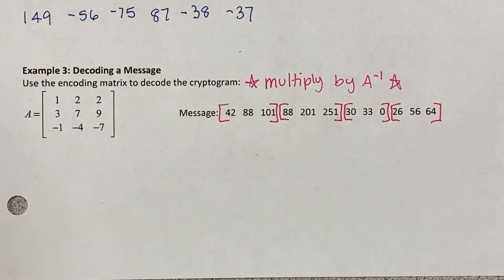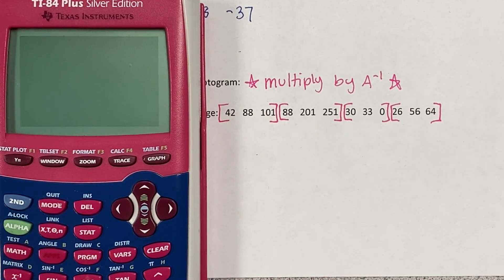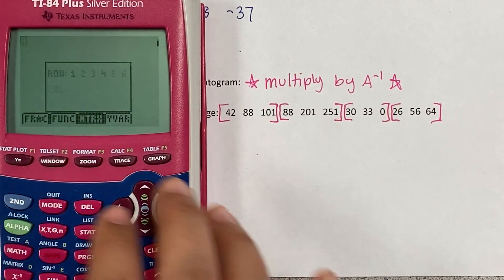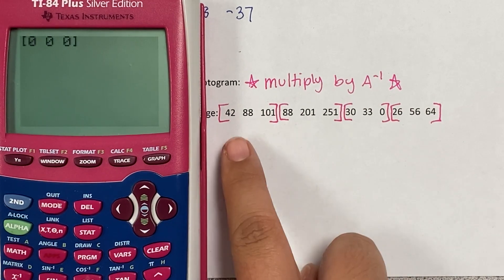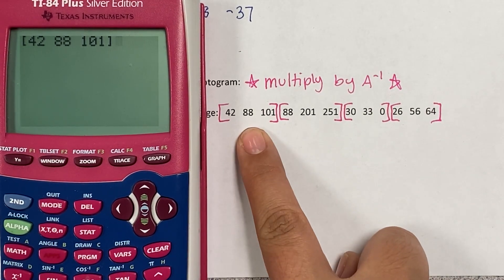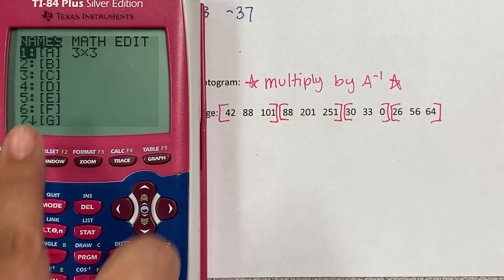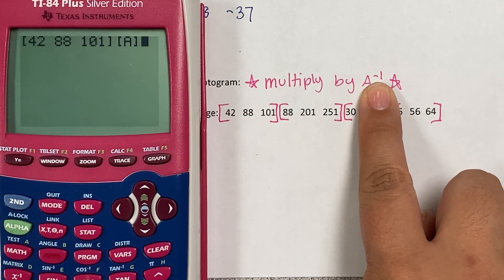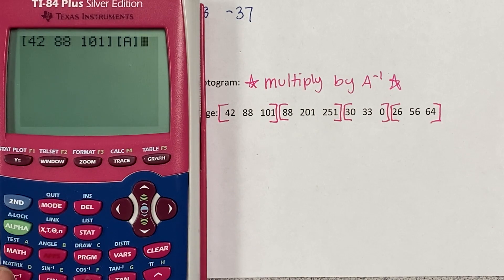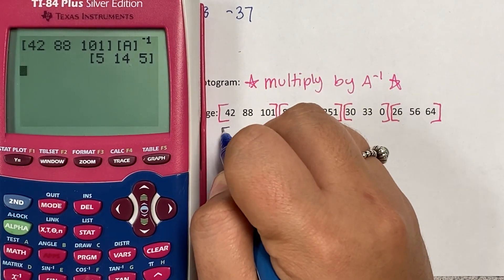I want to multiply by A inverse. In the calculator I'll take each 1×3 matrix and multiply by A inverse. Order matters in matrix multiplication — the 1×3 must come first, otherwise you'll get an error. I go to the matrix menu with second X⁻¹, select matrix A, then hit X⁻¹ to get the inverse, and press enter. That gives me the first three decoded numbers.